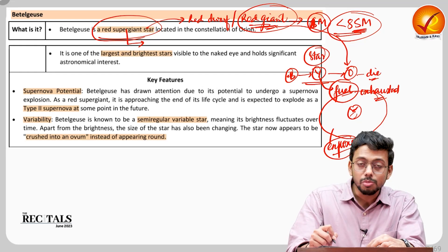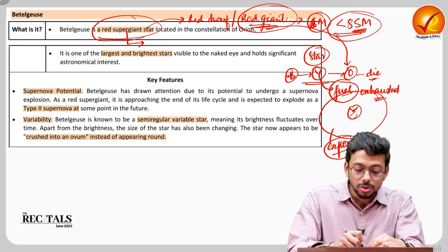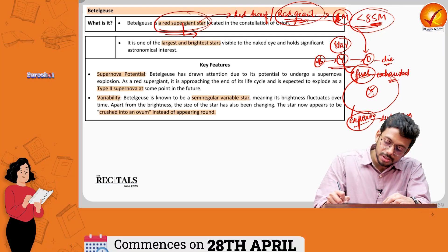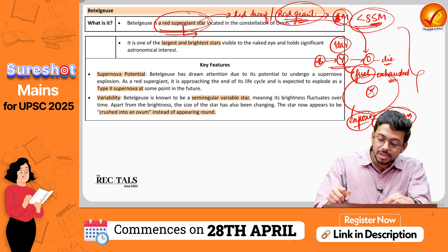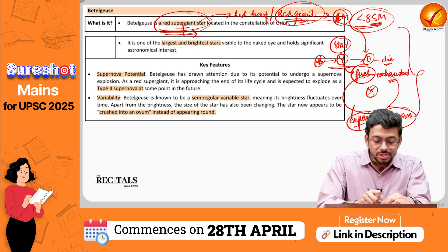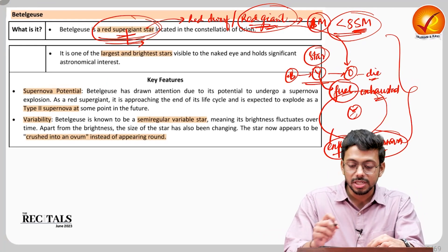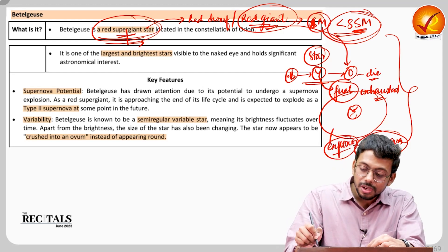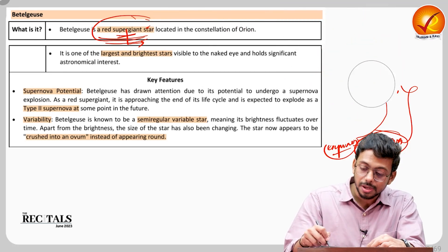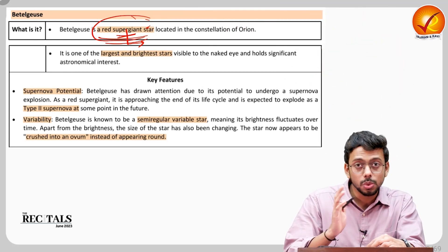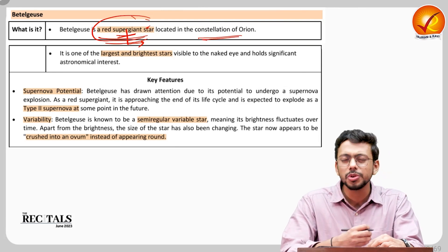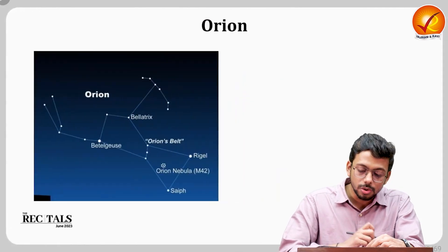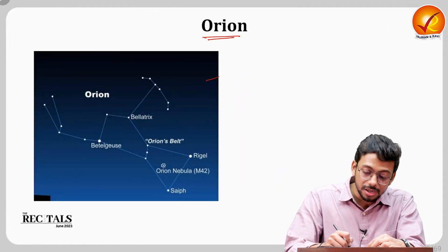Since the mass is more than 8 solar masses for this red supergiant, it will lead to a supernova explosion — something we have already seen in previous topics. Red supergiant stars are those in which the mass is more than 8 solar masses. This particular star, Betelgeuse, is present in the constellation Orion. There are various well-known constellations, and Orion is one of them.